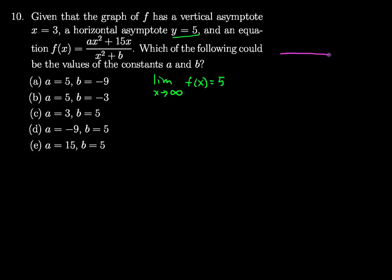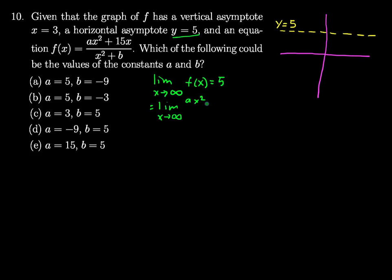If we had our graph here, as we go out to positive and negative infinity on x, we need to get closer and closer to the line y equals 5. Bringing in our function, this will equal the limit as x goes to infinity of ax squared plus 15x divided by x squared plus b.